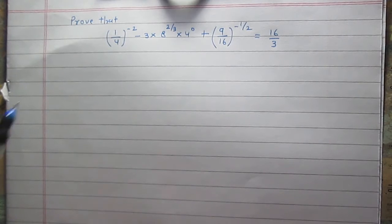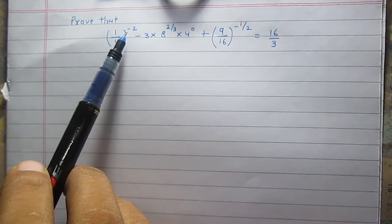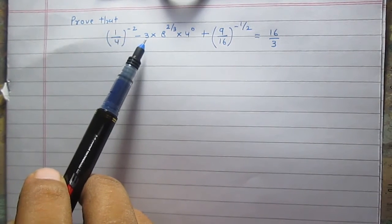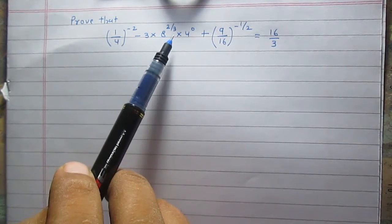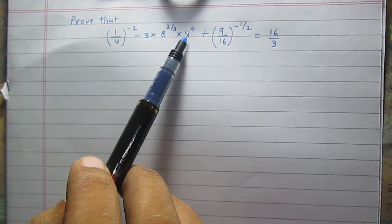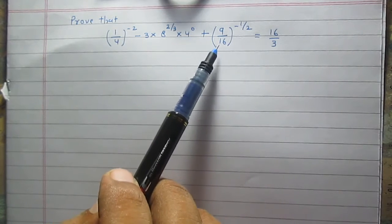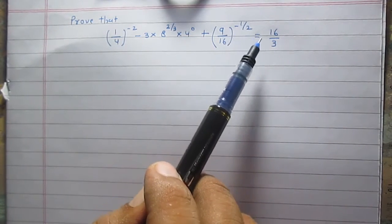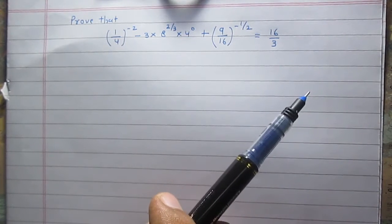Prove that (1/4) raised to the power minus 2, minus 3 multiplied by 8 raised to the power 2/3, multiplied by 4 raised to the power 0, plus (9/16) raised to the power minus 1/2, is equal to 16/3.